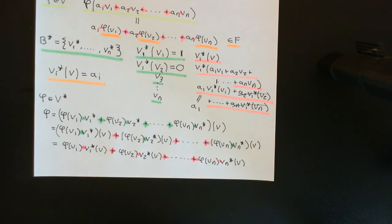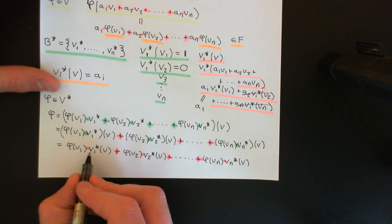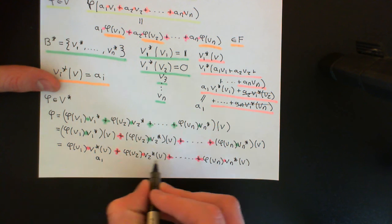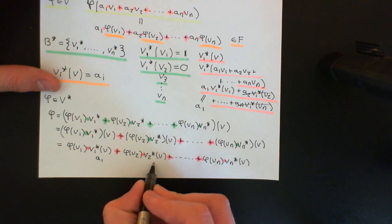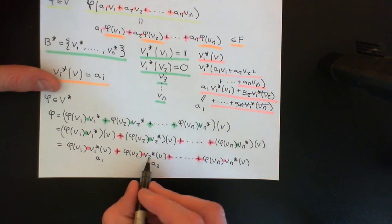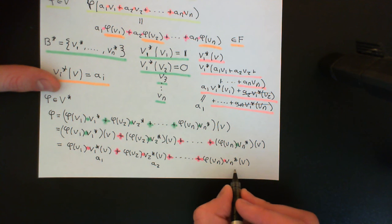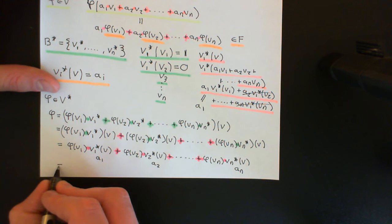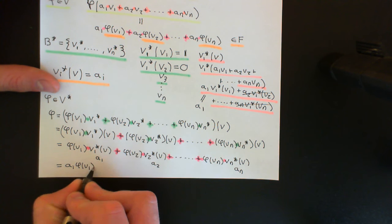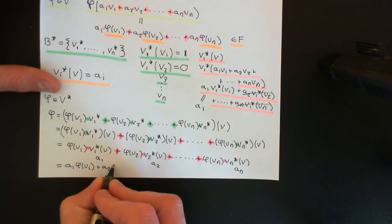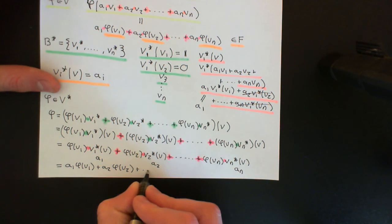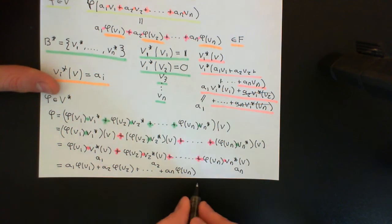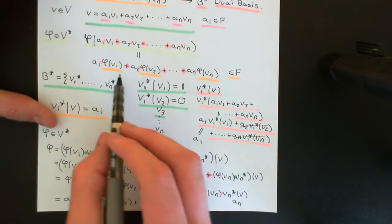V1 star of V gives the first coordinate A1, V2 star of V gives the second coordinate A2, and Vn star of V gives the n-th coordinate An. So this whole expression becomes A1 times phi(V1) plus A2 times phi(V2) plus all the way up to An times phi(Vn), which is exactly what phi(V) equals by linearity.